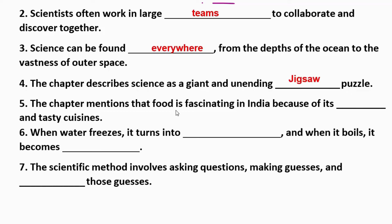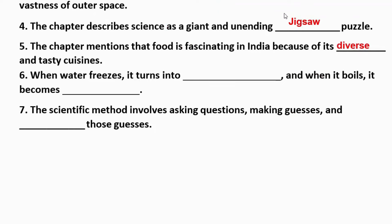Question 5: The chapter mentions that food is fascinating in India because of its __ and tasty cuisines. The answer is diverse.